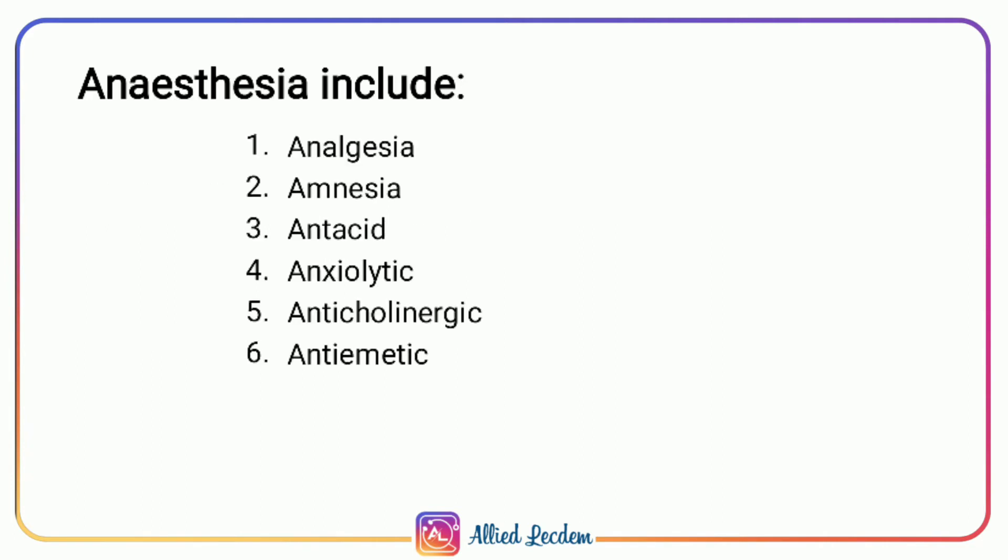Anesthesia includes analgesia — loss of pain; amnesia — loss of memory; antacid to prevent acidity; anxiolytic to reduce anxiety; anticholinergic to control secretions; and antiemetic to control vomiting.